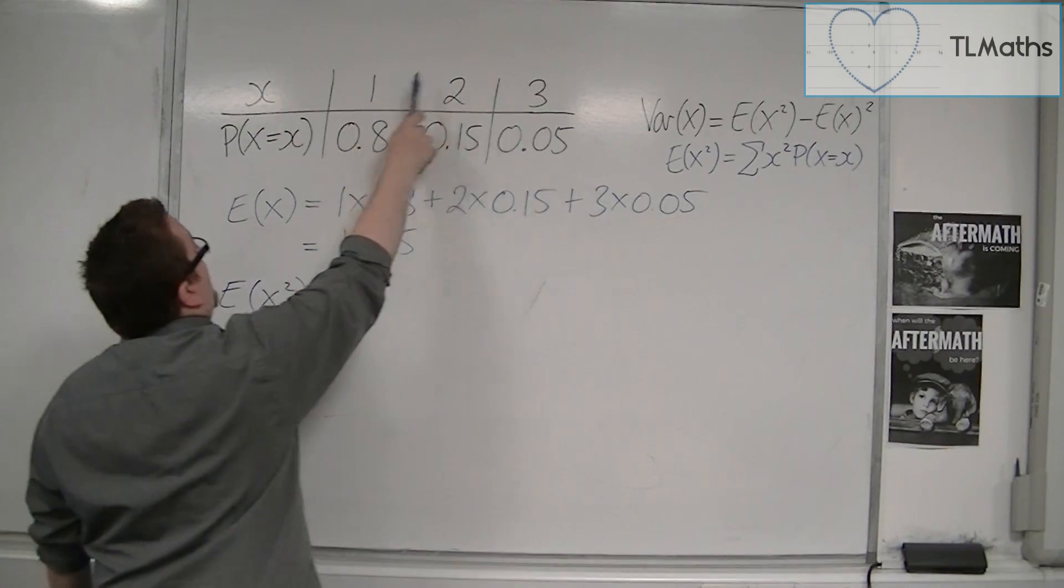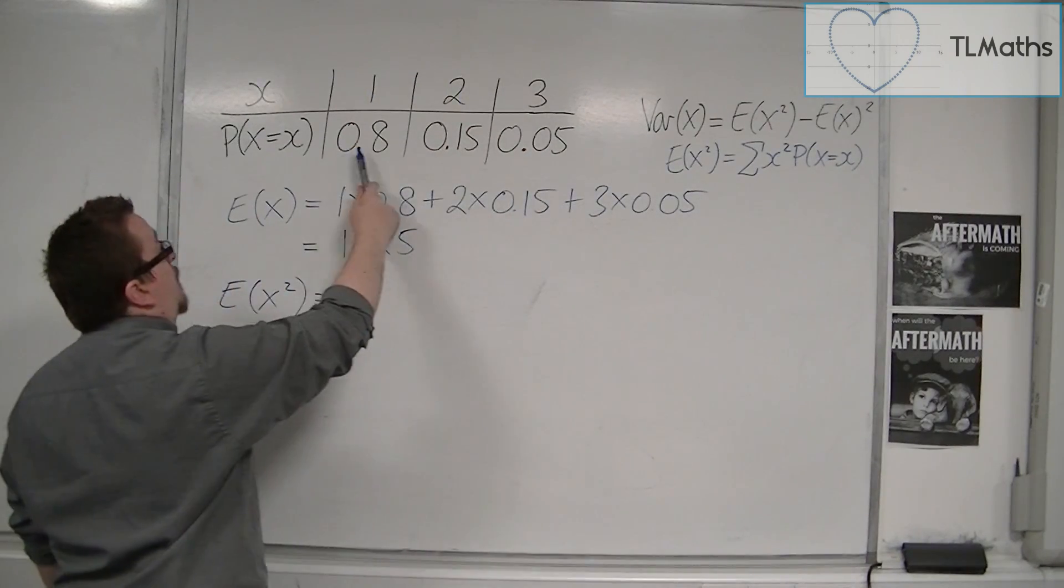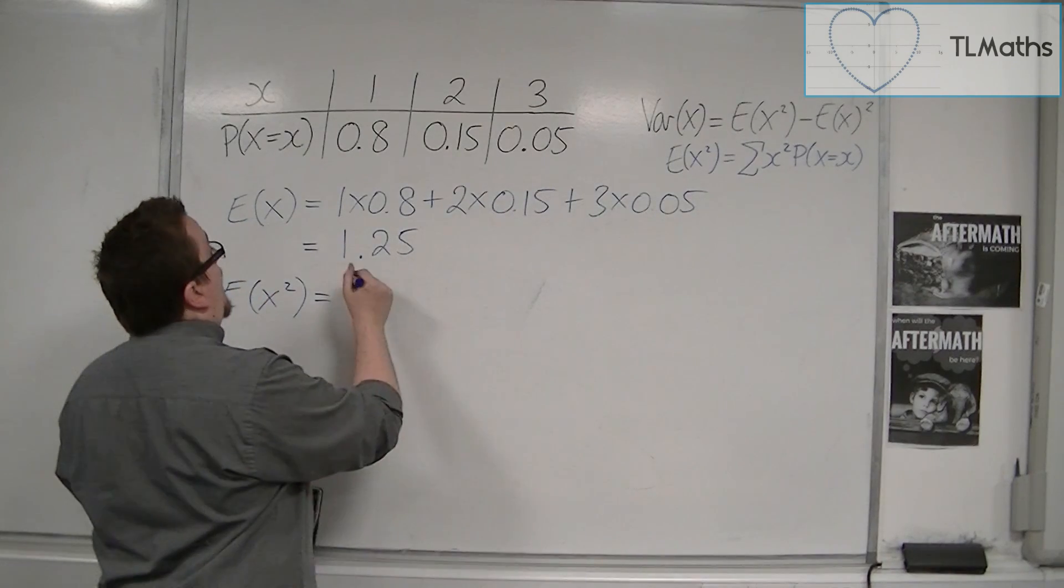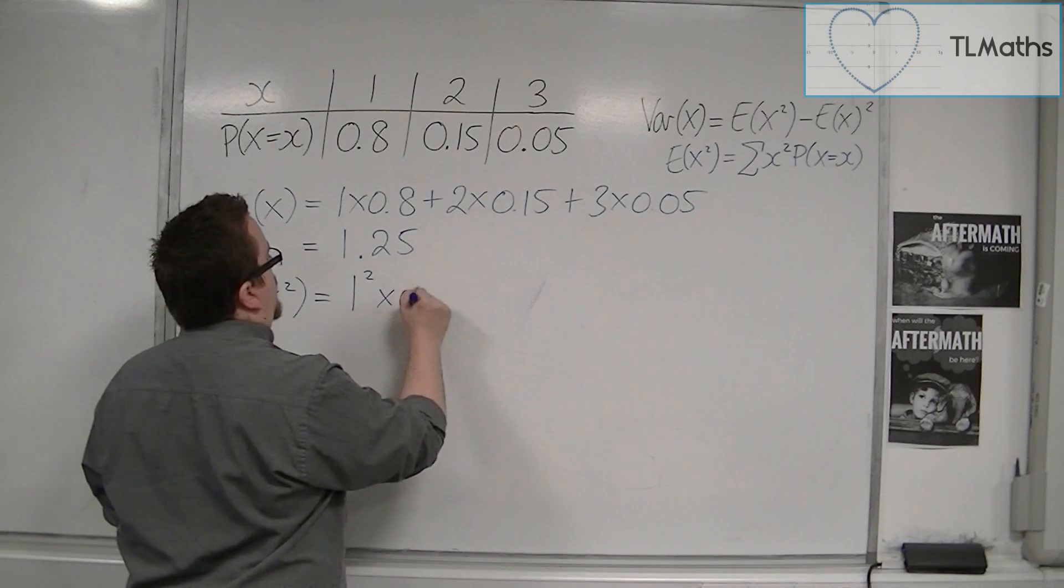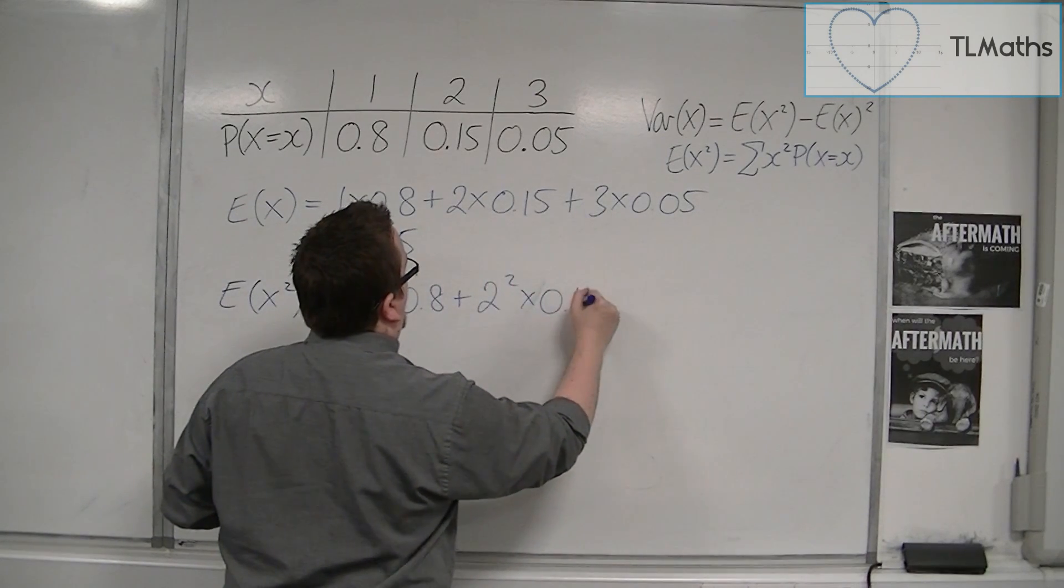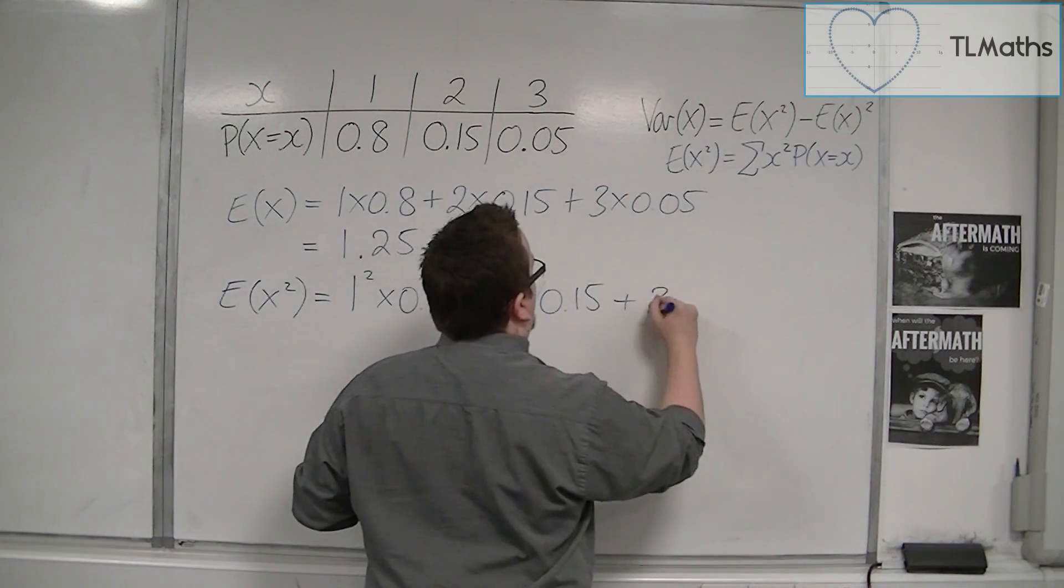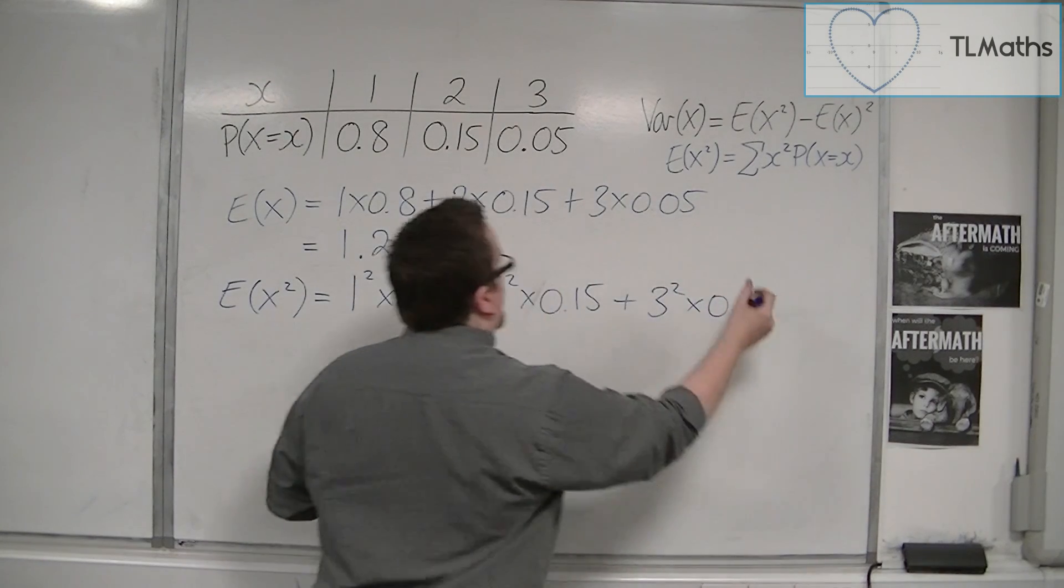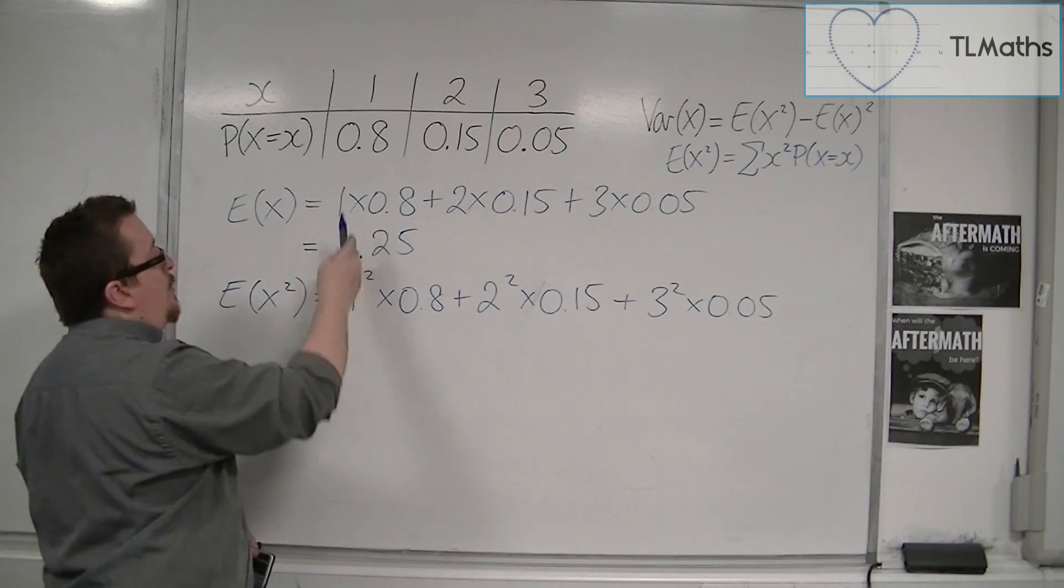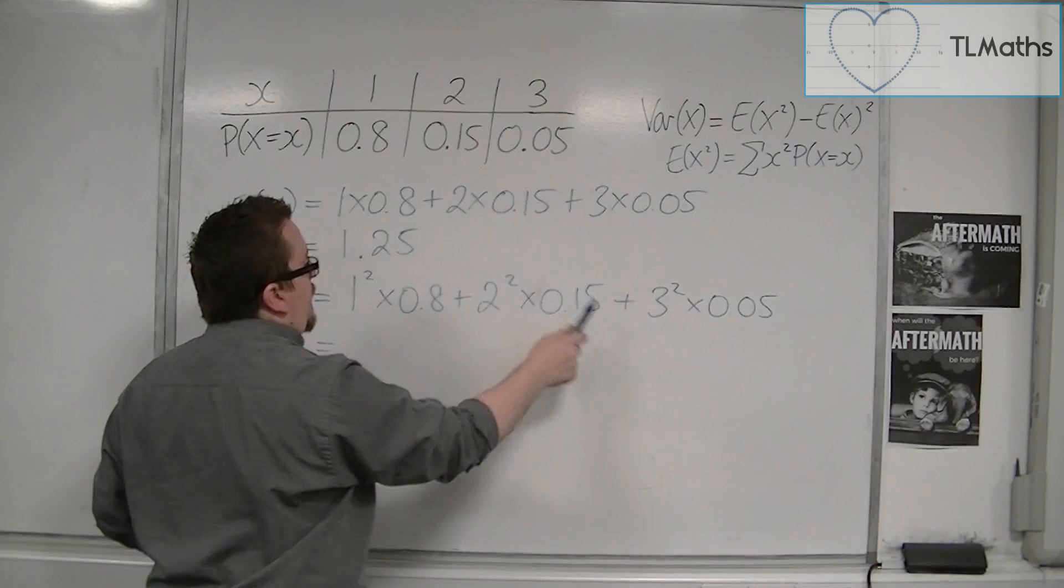We need to square each of the X's, multiply them by their probabilities, and add them together. So this is 1 squared times 0.8 plus 2 squared times 0.15 plus 3 squared times 0.05. Effectively, it's exactly the same as E of X, except you're squaring each of the X values.